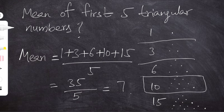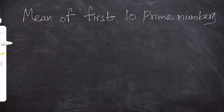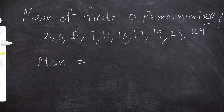Let's solve another indirect example: calculate the mean of the first 10 prime numbers. The first 10 prime numbers are 2, 3, 5, 7, 11, 13, 17, 19, 23 and 29. By adding all those numbers we get 129 as the sum, and the number of observations is 10, so the final answer is 12.9.